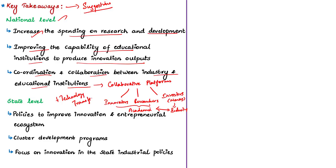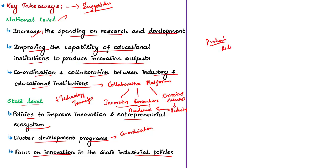Suggestions for states: form policies at the state level to improve the innovation and entrepreneurial ecosystem; focus more on cluster development programs; and ensure industrial policies framed by states focus more on innovation, since only a few innovation-specific policies exist even in the most innovative states. From a prelims perspective, know who released the index, its aim, the top-ranking states, and its dimensions. The index's outcomes and key suggestions can also be used in mains answers related to economy and policy-making.